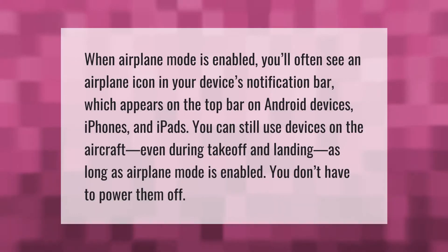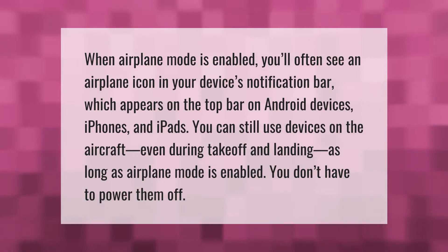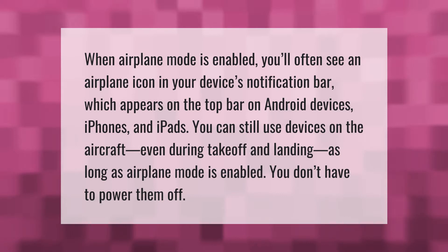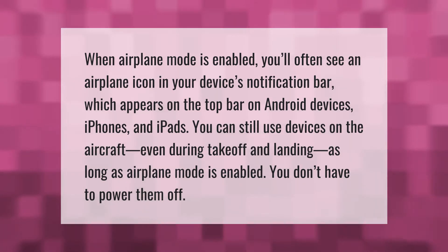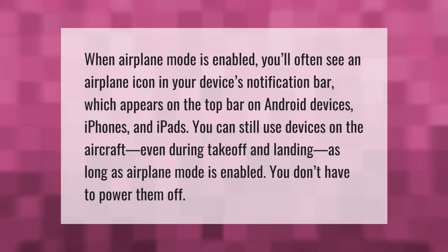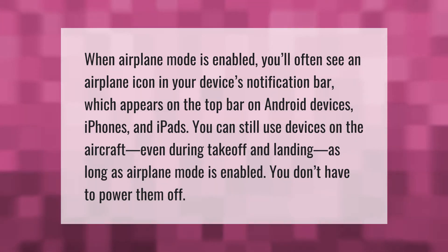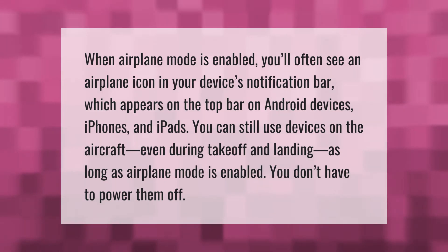When airplane mode is enabled, you'll often see an airplane icon in your device's notification bar, which appears on the top bar on Android devices, iPhones, and iPads. You can still use devices on the aircraft even during takeoff and landing, as long as airplane mode is enabled — you don't have to power them off.